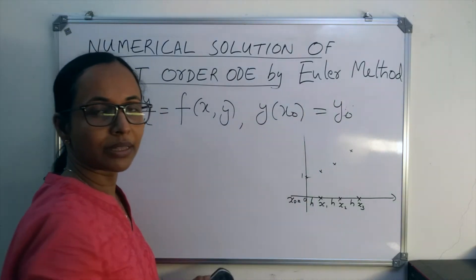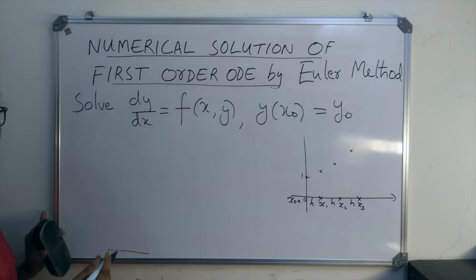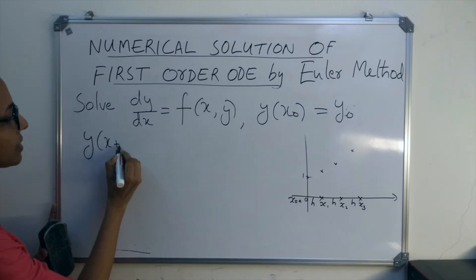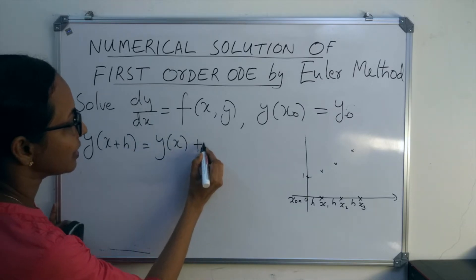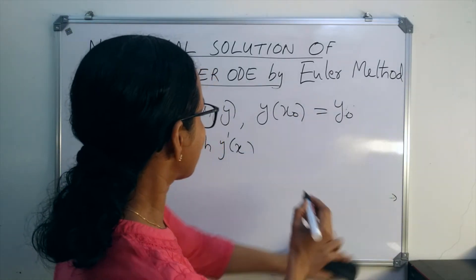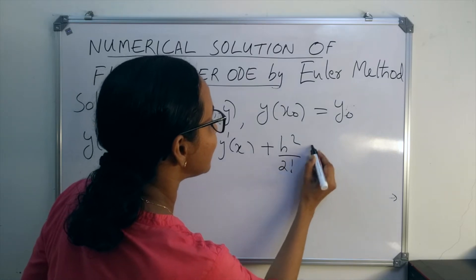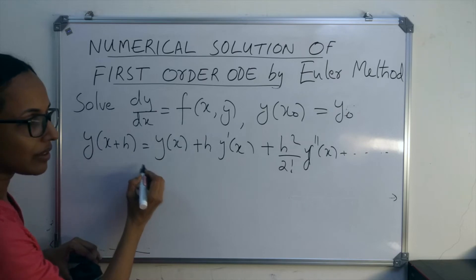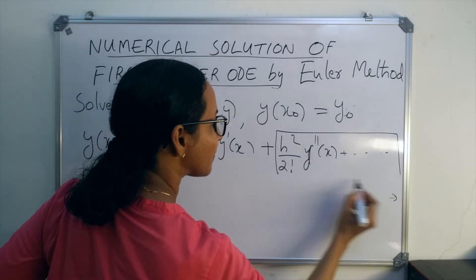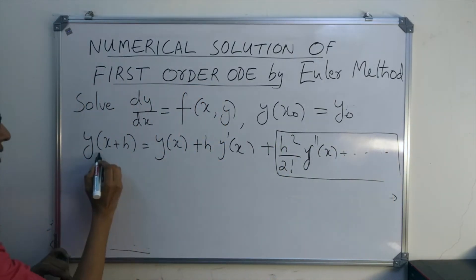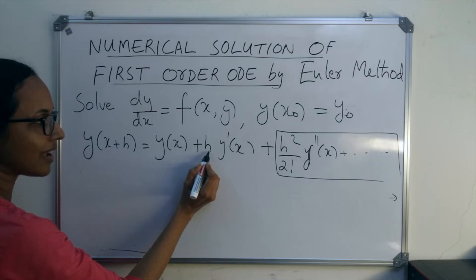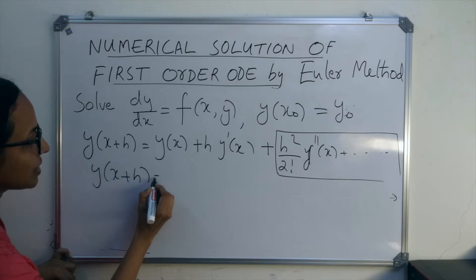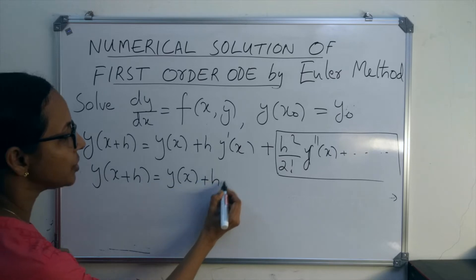Let y(x) be the solution. We can write the Taylor series expansion: y(x + h) = y(x) + h·y'(x) + h²/2!·y''(x) + etc. If h is very small, we can ignore higher powers of h, so we write y(x + h) ≈ y(x) + h·y'(x). Since y'(x) = f(x, y), we can write y(x + h) = y(x) + h·f(x, y).